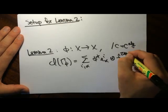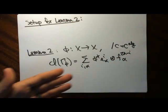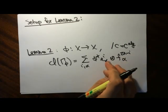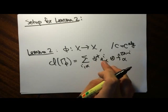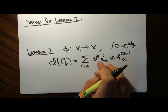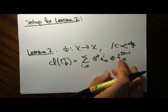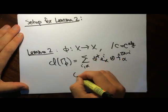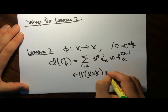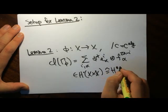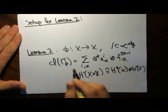This is kind of believable: it's like when you take a vector space endomorphism and write it in terms of some elements and their dual basis. This is an element of X cross X, which by the Künneth formula is isomorphic to this tensor product.